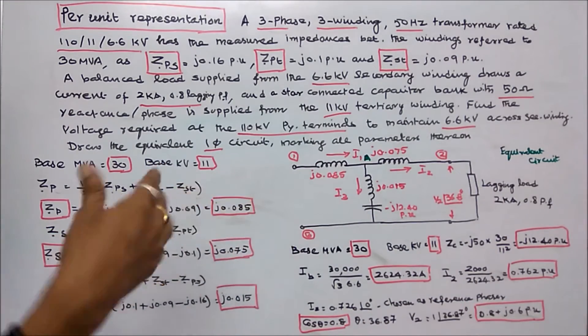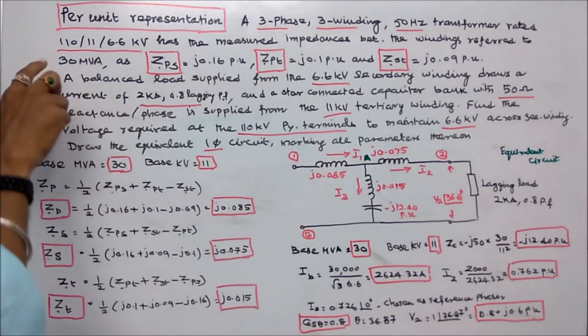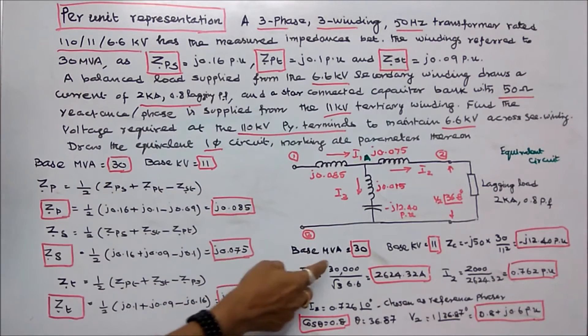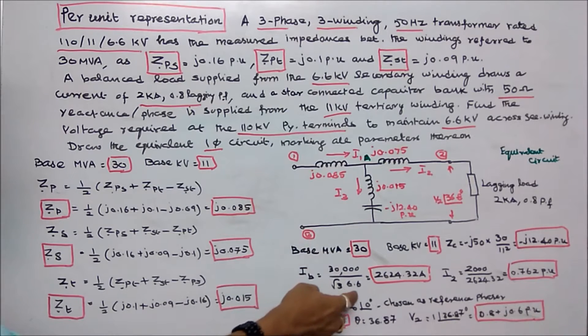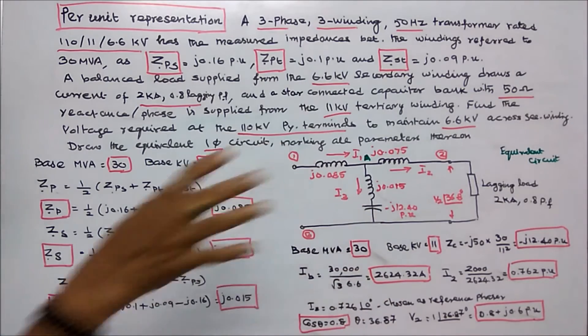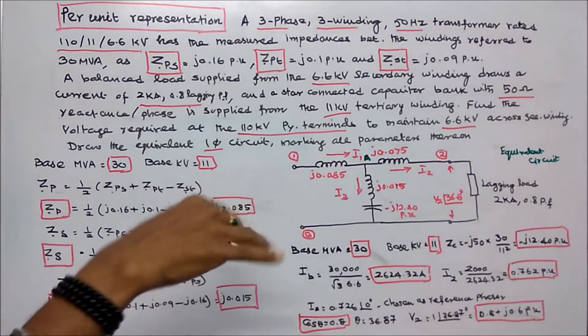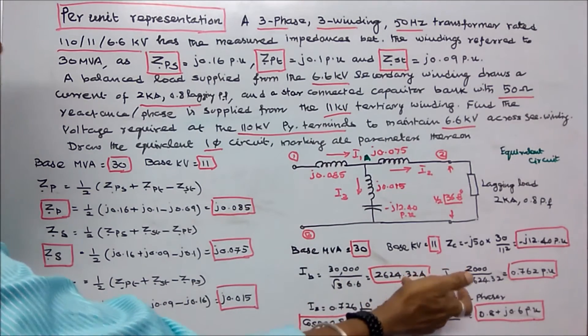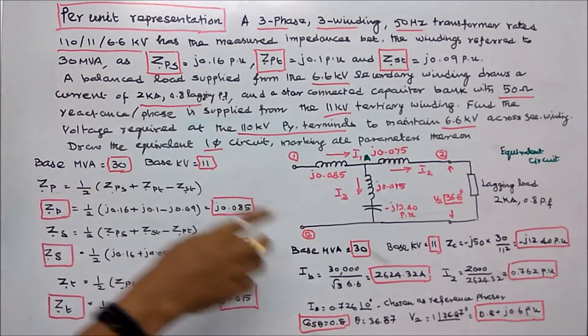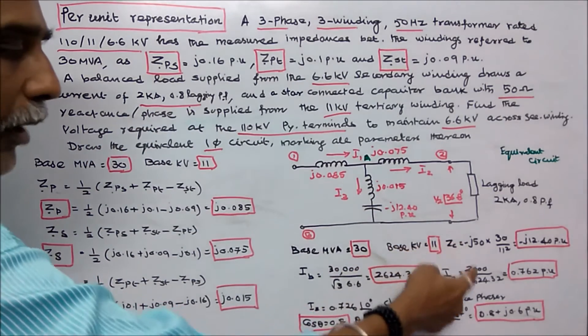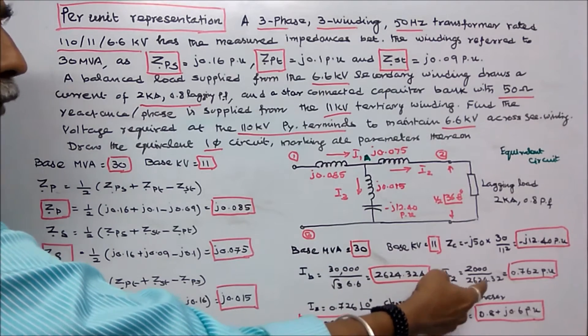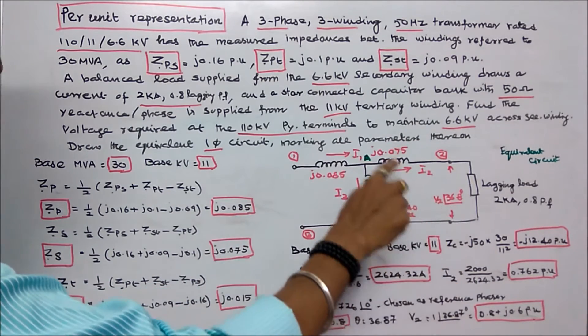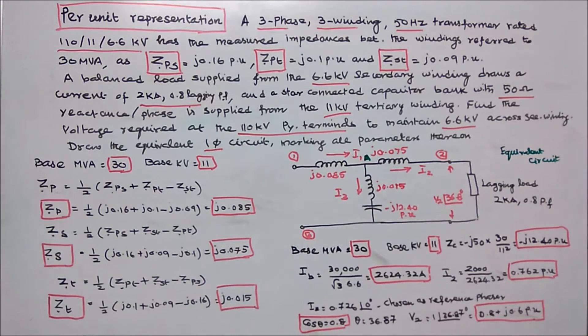Next I have to find the base current. Here 30 MVA, that is 30,000 divided by root 3 into 6.6. Base current is 2624.32 Amps. Once I know the base current I can easily find the secondary current I2. I2 is equal to 2 kilo Amps, 2000 divided by 2624.32. I2 is equal to 0.762 angle 0, that is chosen as a reference.